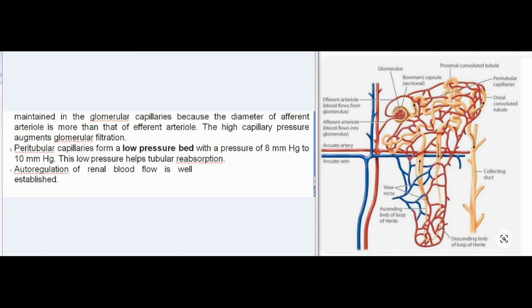The high capillary pressure augments glomerular filtration. Peritubular capillaries form a low-pressure bed with a pressure of 8 to 10 mmHg, and this low pressure helps tubular reabsorption. Autoregulation of renal blood flow is well established.